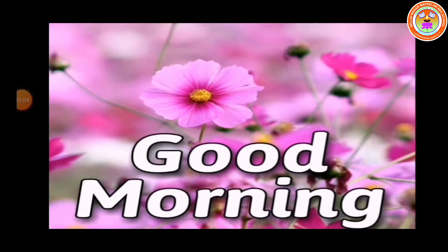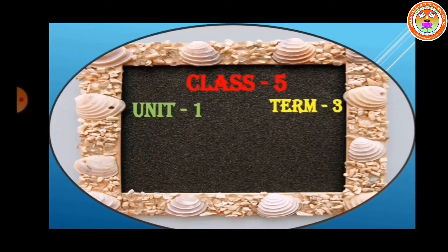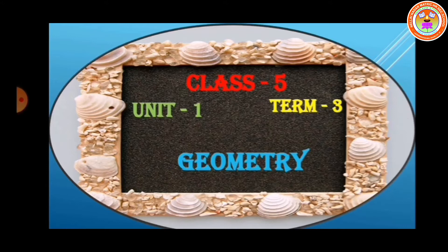Good morning students. Today I am going to teach class 5, term 3, unit 1, Geometry. In the previous video we have seen perimeter of the rectangle and square. And in today's class we are going to see area of the rectangle and square.